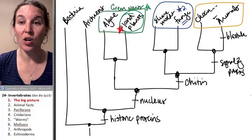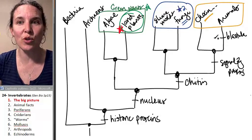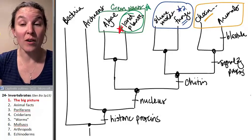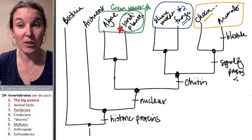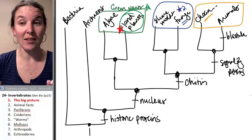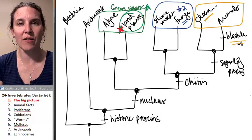I want to remind you that our choanoflagellates are the outgroup. They are the sister group to animals. We have characteristics we share with choanoflagellates. That's the signaling proteins. But all animals are multicellular, and they all had a blastula during formation.